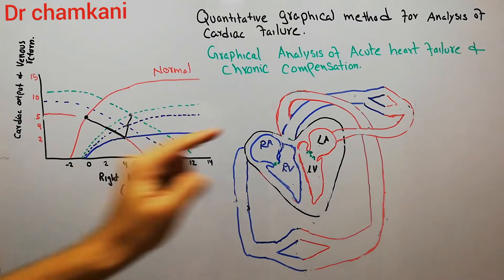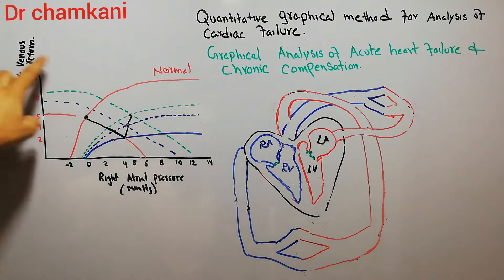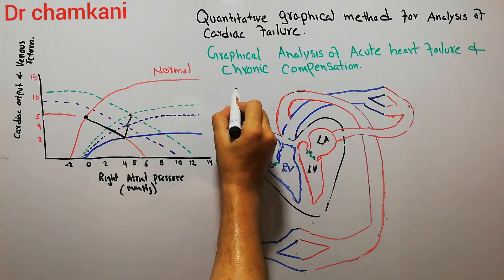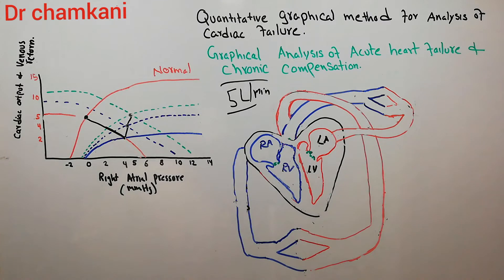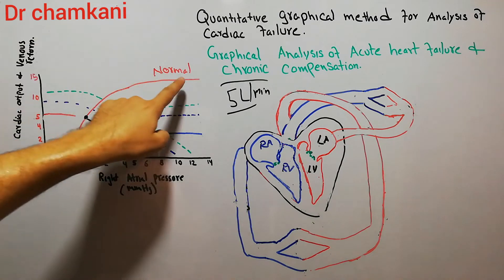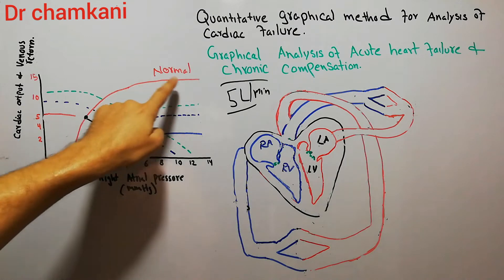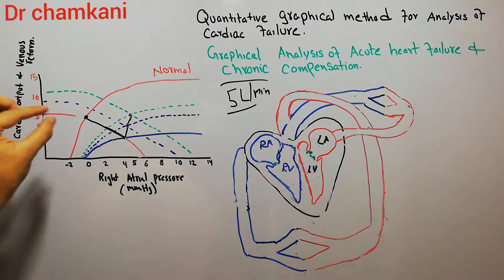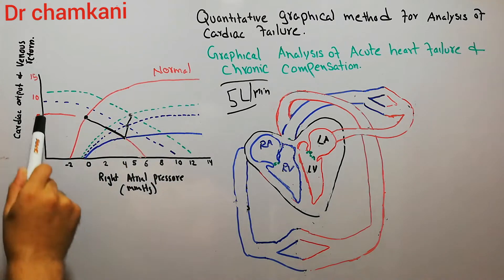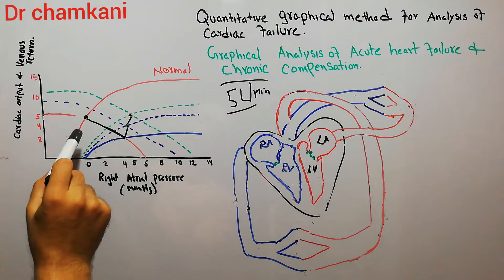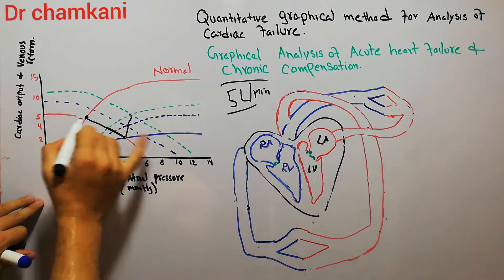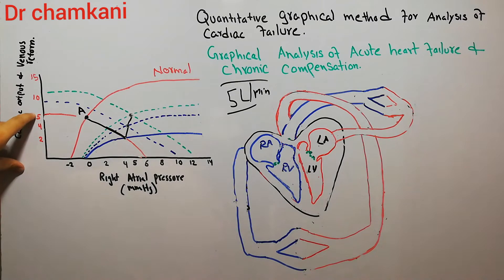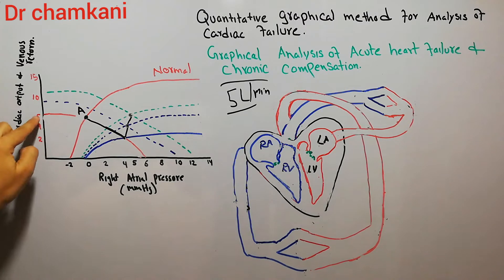The amount of blood that returns back to the heart is the venous return. Normally, cardiac output equals venous return, and its value is around five liters per minute. The normal cardiac output curve and the normal venous return graph have been shown here. The point at which these two graphs meet each other is known as Point A. At Point A, the cardiac output equals venous return and is five liters per minute.